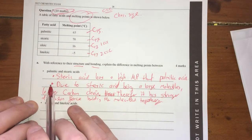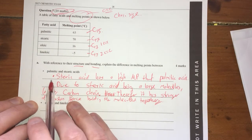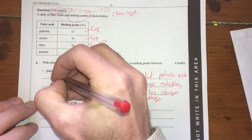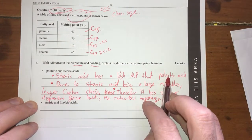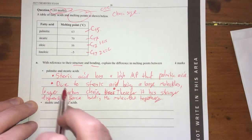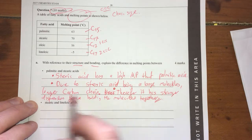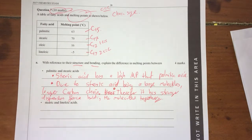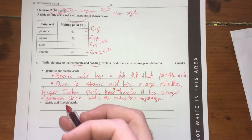So, clearly, two dot points. This can also be broken into two dot points as well. We've stated what's happened, what the difference is, and then we've talked about why that difference is, both in the structure, because it's a longer chain, and therefore, also the bonding, because of the dispersion forces are bigger because of the longer chain.